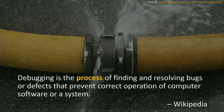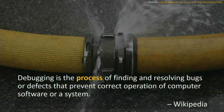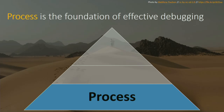To put a definition to debugging, I really like this one from Wikipedia: debugging is the process of finding and resolving bugs or defects that prevent correct operation of computer software or a system. I highlight the word 'process' because process really is the foundation of effective debugging — going from identifying an issue all the way through to resolving it.